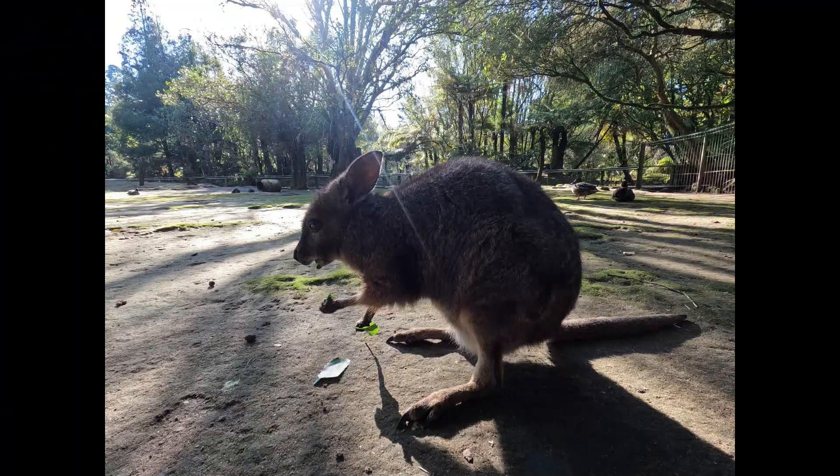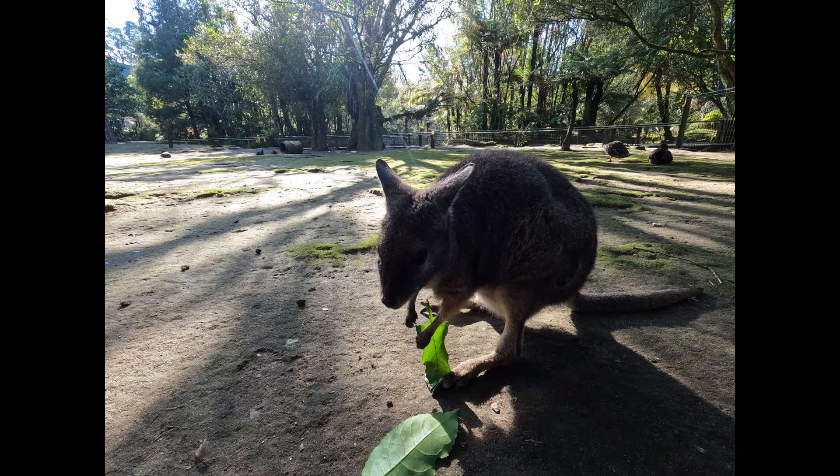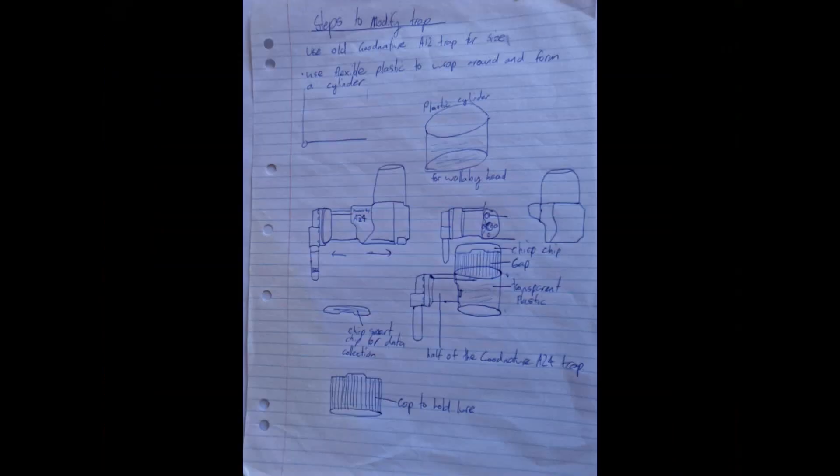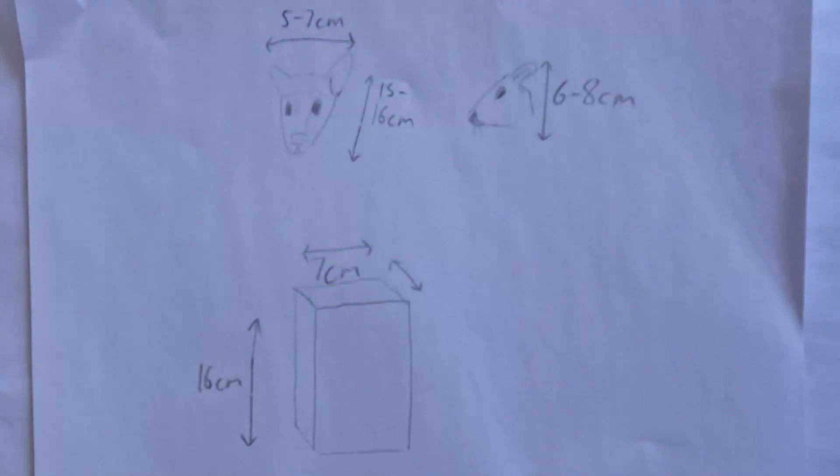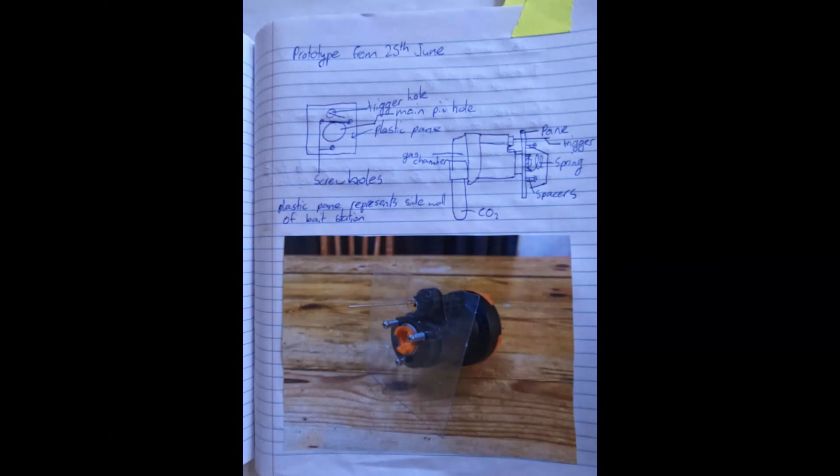One idea for solving this problem stood out to me more than any of my other solutions: a humane trap that would only kill wallabies. After some planning I decided to use a door system — if a wallaby was nearby, a door would open allowing the wallaby to enter a box.